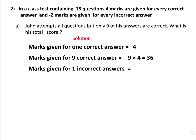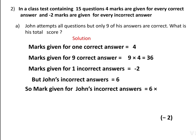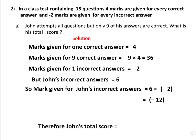Marks given for 1 incorrect answer = −2. John's incorrect answers = 6. Therefore, marks for John's incorrect answers = 6 × (−2) = −12. That means 12 marks are decreasing. He got 36 marks from correct answers. So his total score = 36 − 12 = 24.